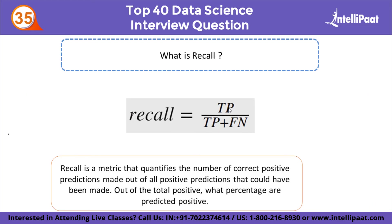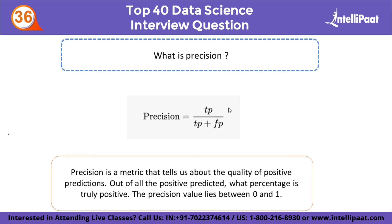What is recall? Recall tells you how many times the model was able to detect a specific category — out of the total positives, what percentage are predicted positive. The formula is: Recall = True Positive / (True Positive + False Negative). What is precision? Precision is how good the model is at predicting a specific category; it measures the accuracy of correct positive predictions. The formula is: Precision = True Positive / (True Positive + False Positive). The precision value lies between 0 and 1.